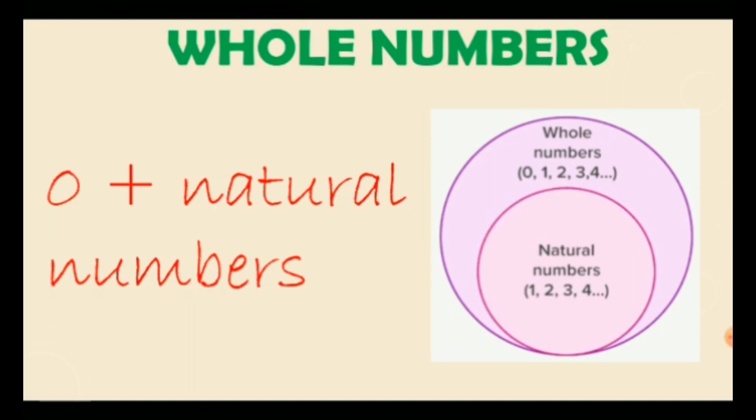2, 3 and so on and whole numbers starts with 0, 1, 2, 3 and so on. This was the little difference between natural numbers and whole numbers.